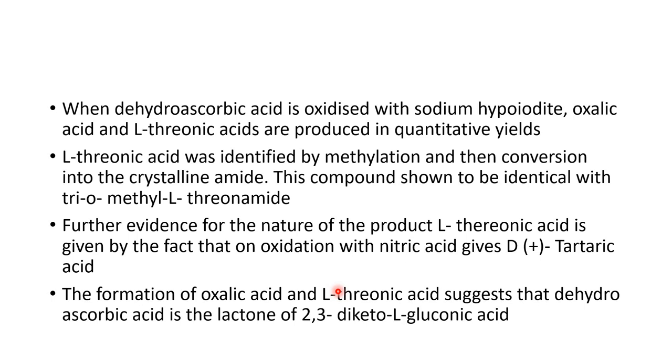When dehydroascorbic acid is oxidized with sodium hypoiodite, oxalic acid and L-threonic acid are produced in quantitative yields. L-threonic acid was identified by methylation and then conversion into the crystalline amide. This compound shown to be identical with tri-O-methyl L-threonamide. Further evidence for the nature of the product L-threonic acid is given by the fact that on oxidation with nitric acid it gives D-plus-tartaric acid. The formation of oxalic acid and L-threonic acid suggests that dehydroascorbic acid is the lactone of 2,3-diketo-L-gulonic acid.